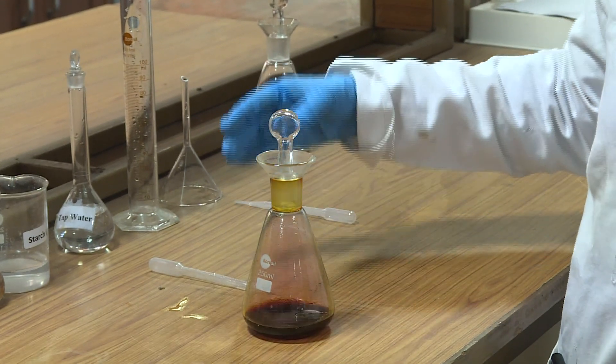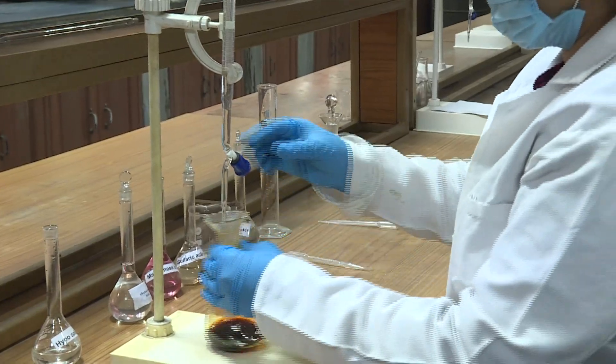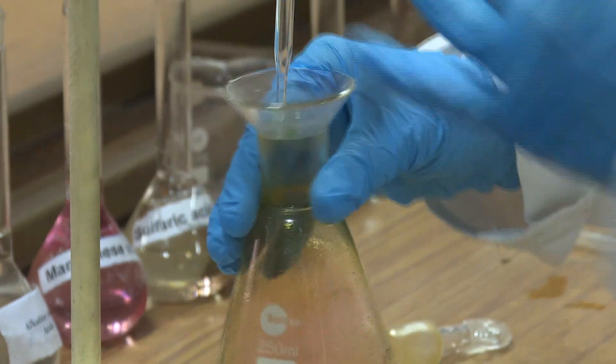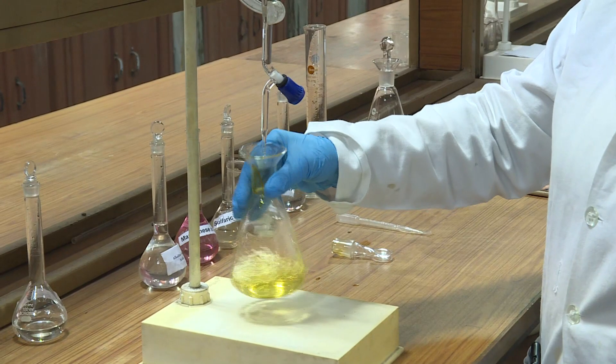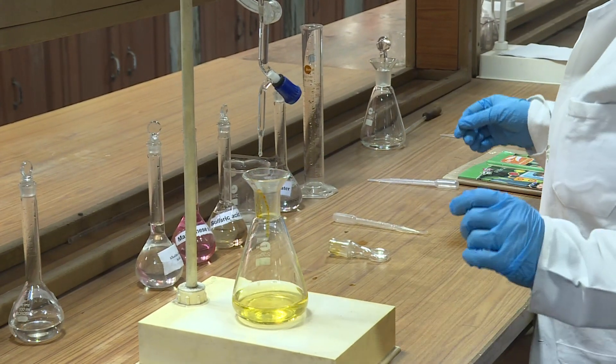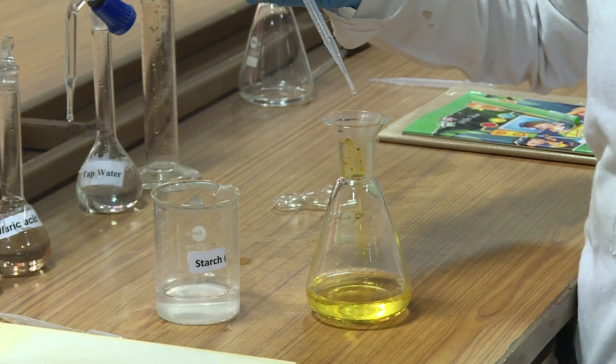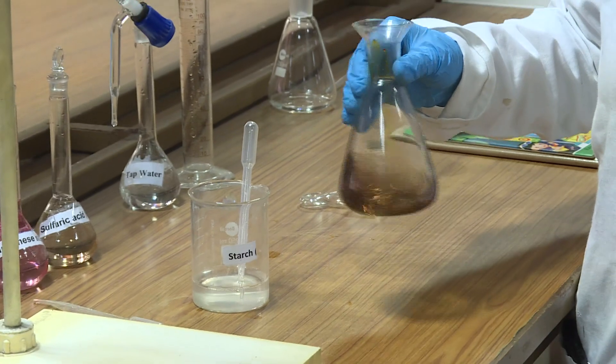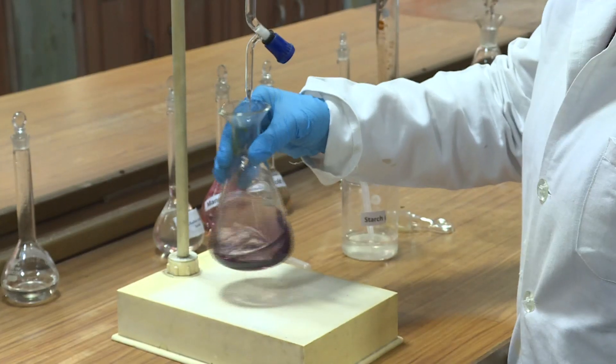Titrate against standard N/40 sodium thiosulphate solution until the color becomes faint yellow. At this stage, add a few drops of starch solution. The color changes to deep blue. Continue the titration until the solution becomes colorless.